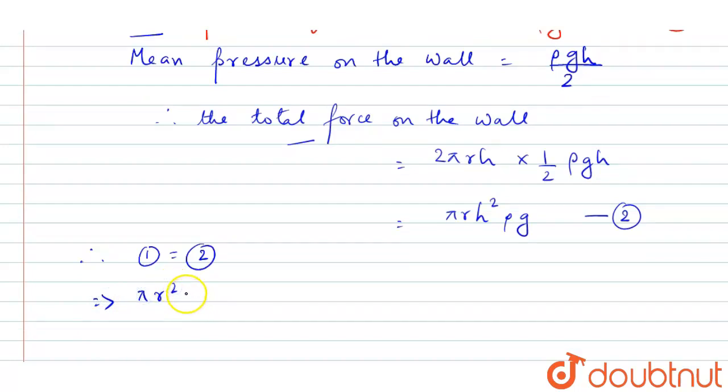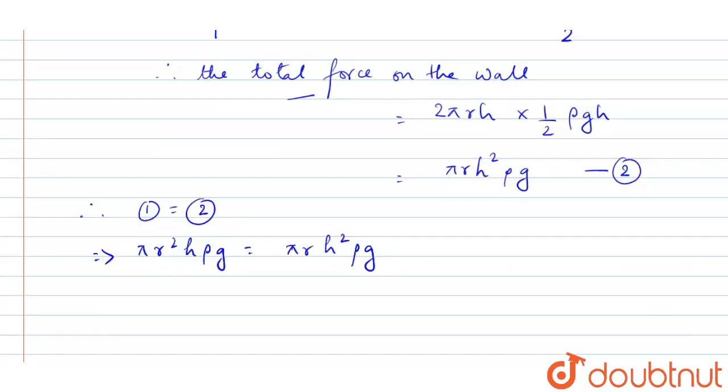π r² h ρ g equals π r h² ρ g. From here, see, this π gets cancelled out, one r gets cancelled out, one of the h gets cancelled out from this equation.